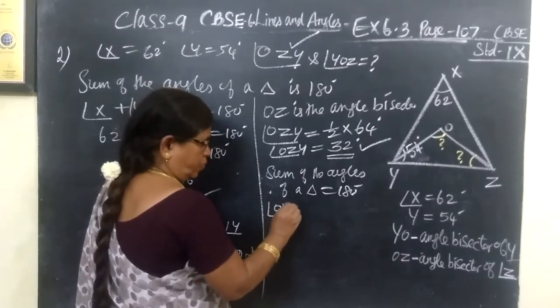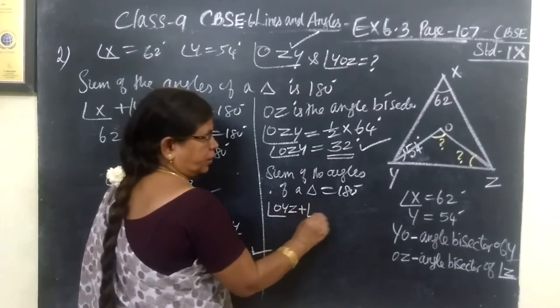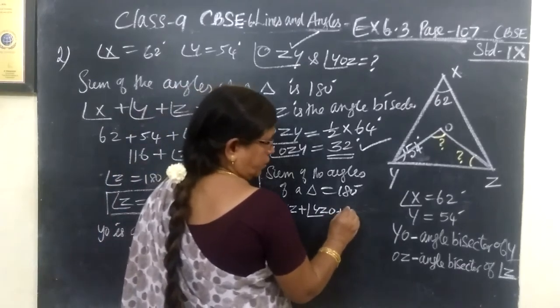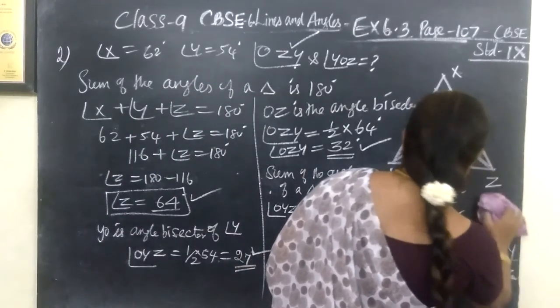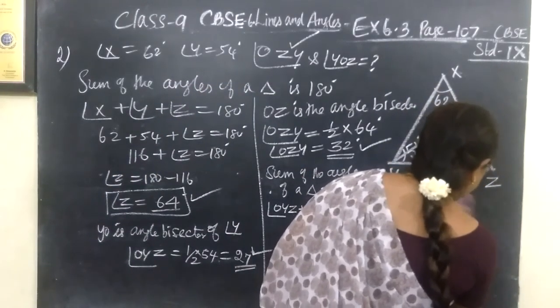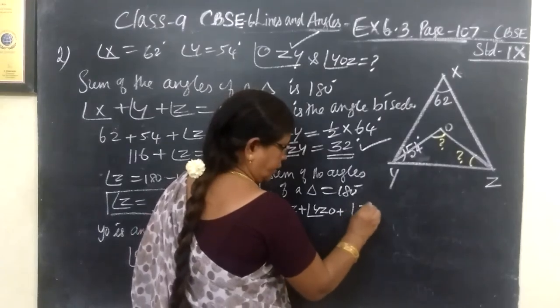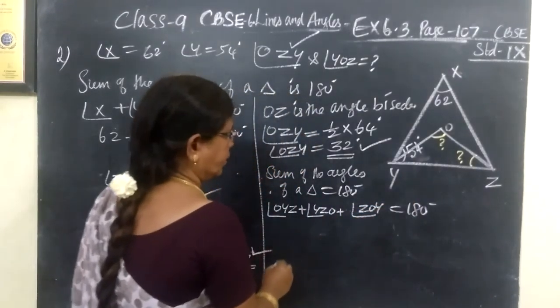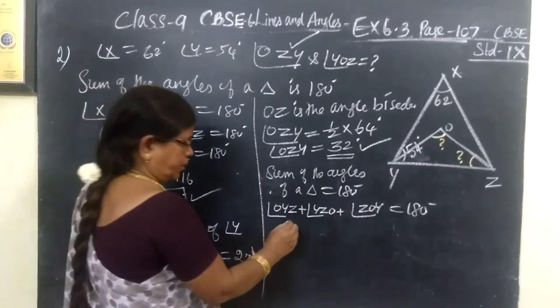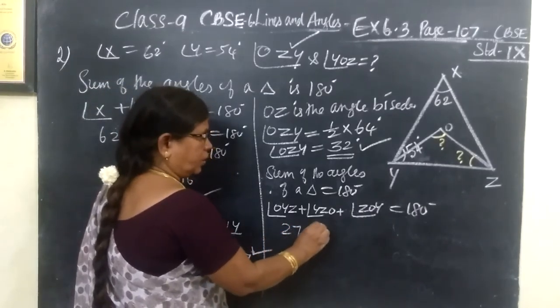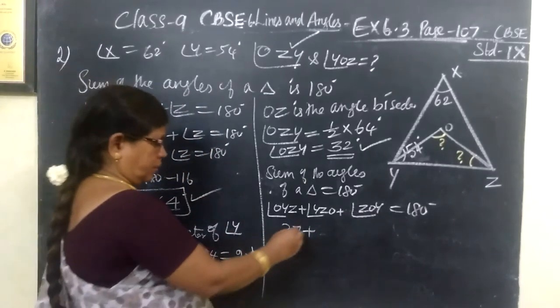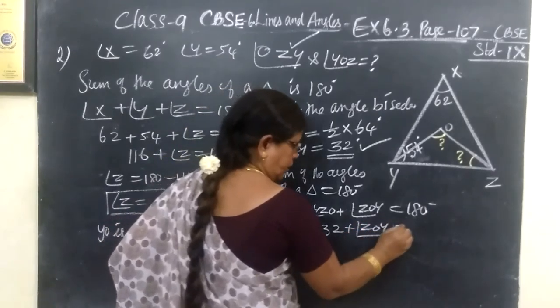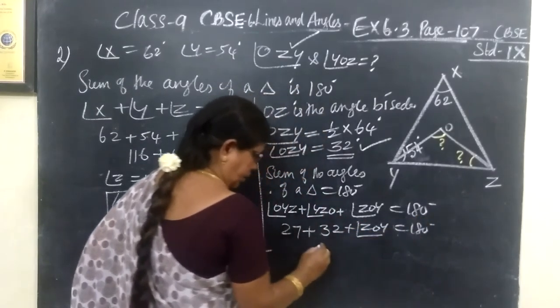Therefore, OYZ then YZO, then plus ZOY. This is equal to 180 degrees. Then, what is OYZ? 27. Then plus 32. Then ZOY equal to 180 degrees.